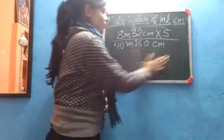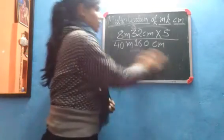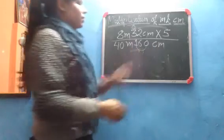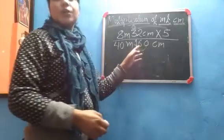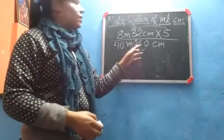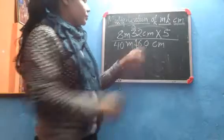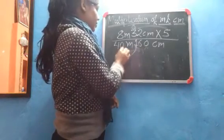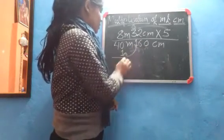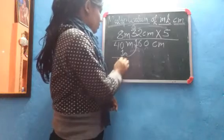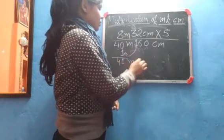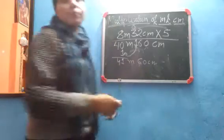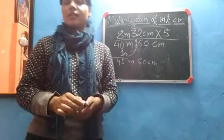Whenever the centimeter result is a 3-digit number, you just add that extra meter to the meter column. So we add 1 meter to 40, giving us the final answer. Do you understand, students?